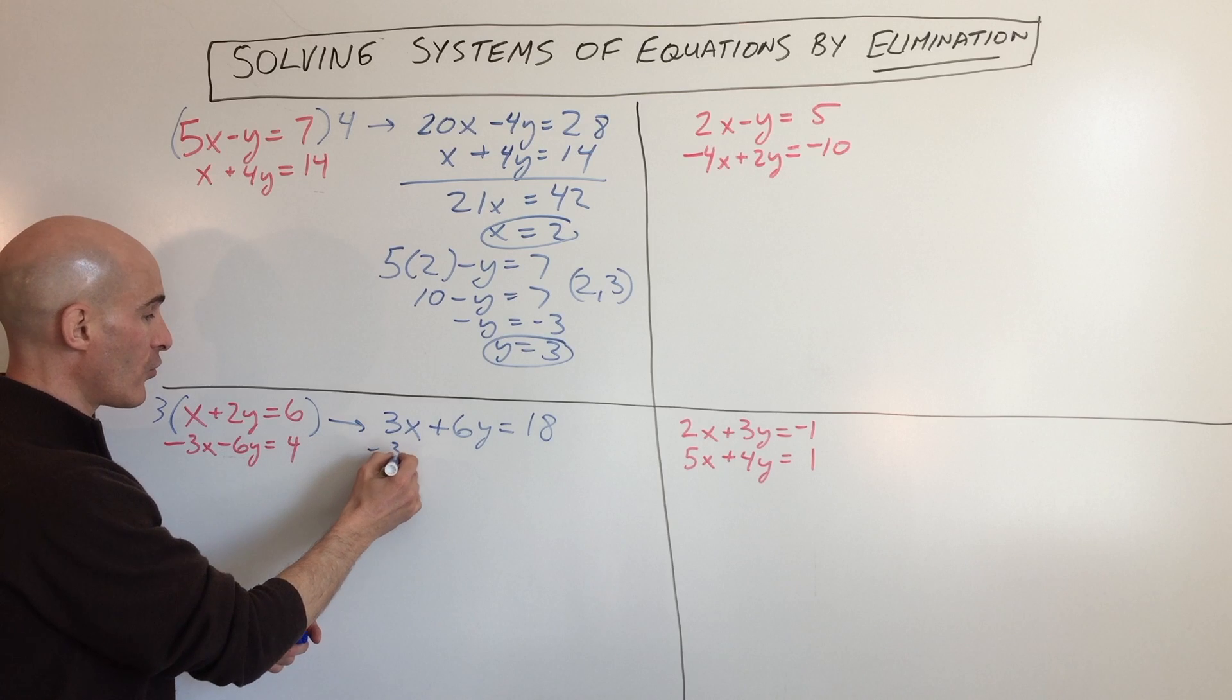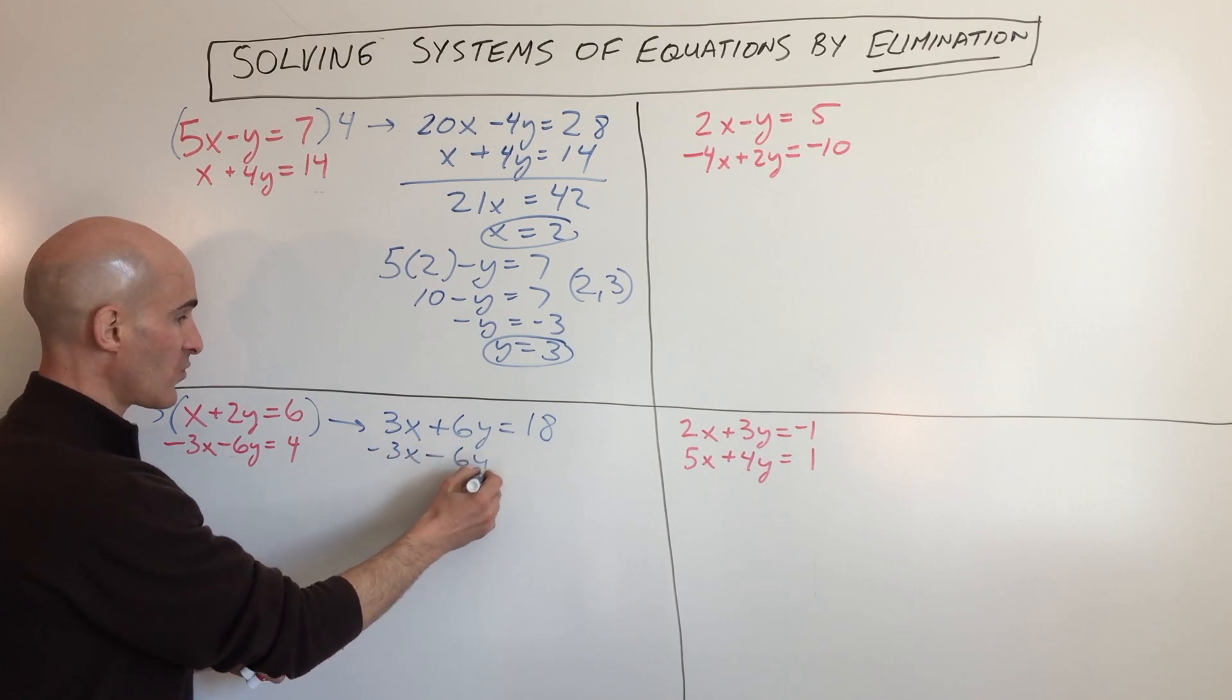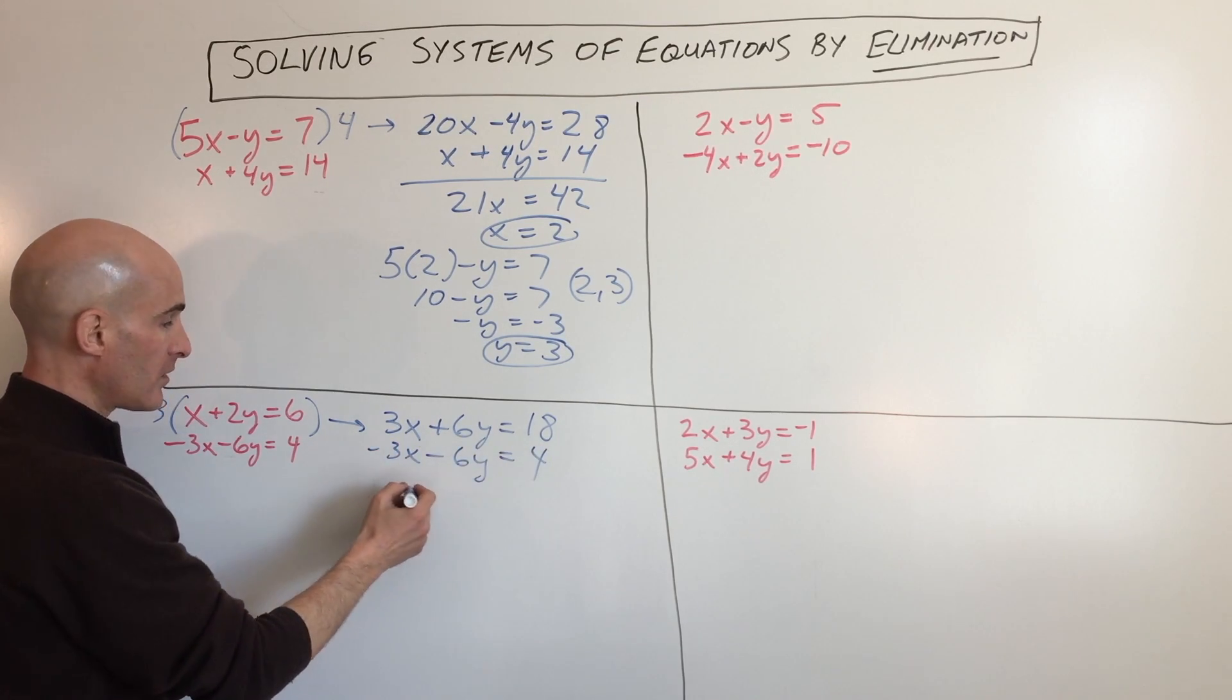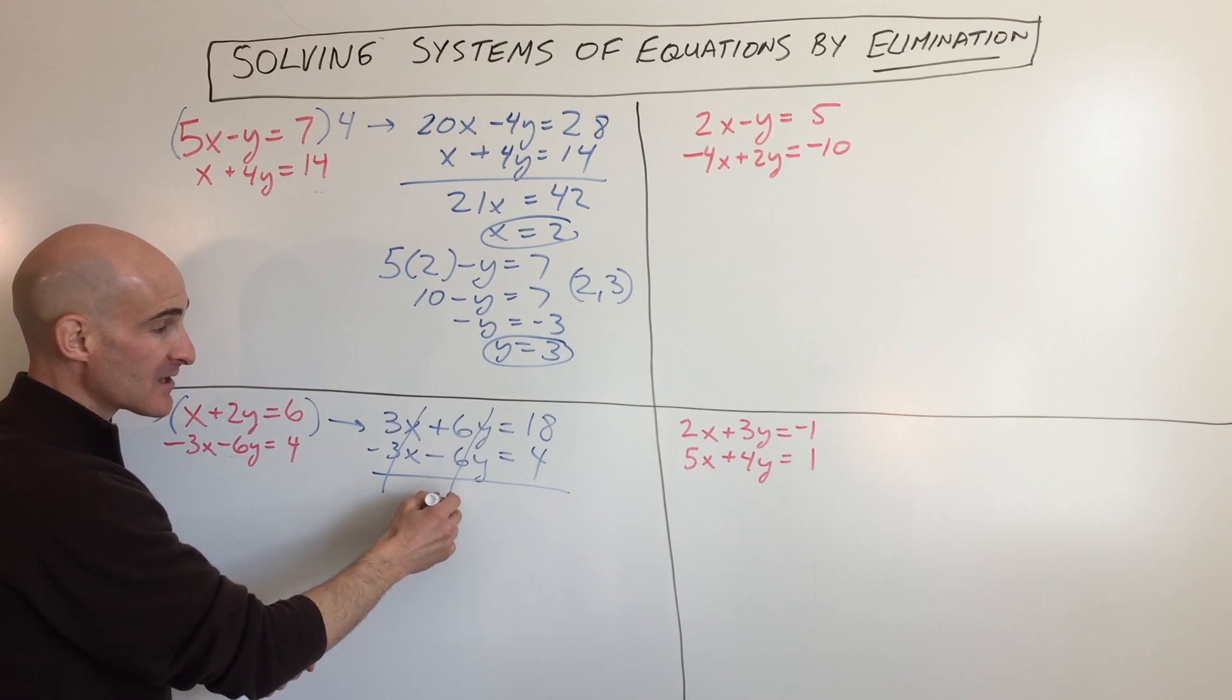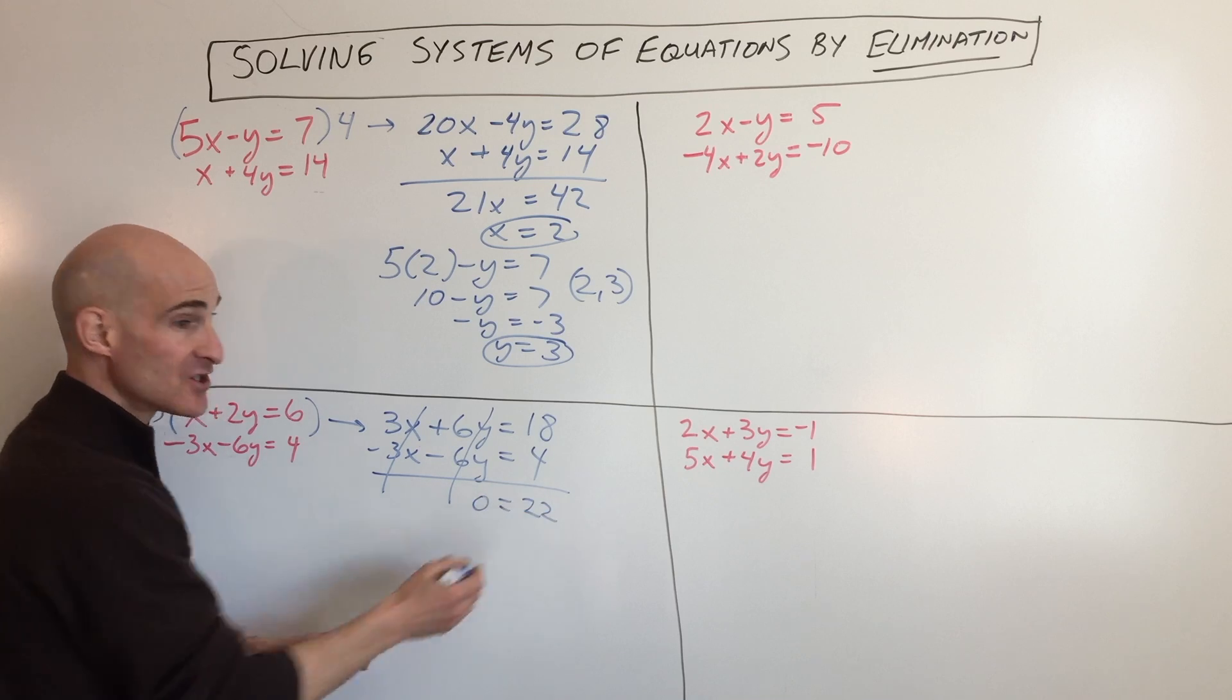And then this one we're just going to carry over, negative 3x minus 6y equals 4. And when we add, the x's cancel, the y's cancel. We end up getting 0 equals 22.